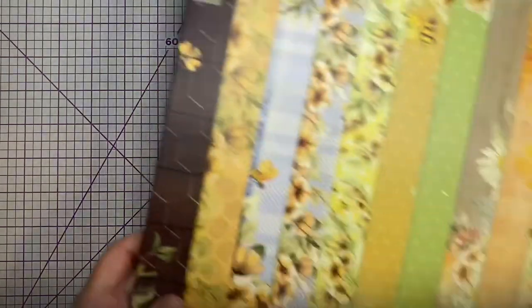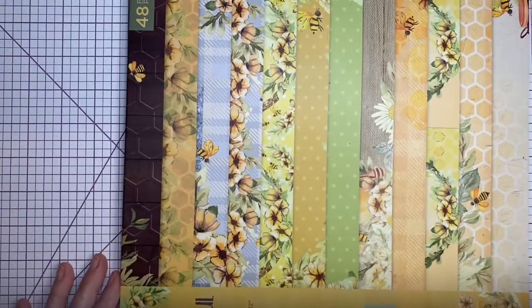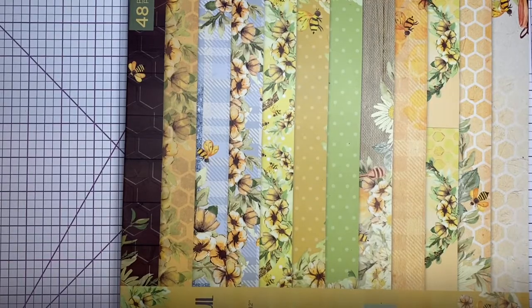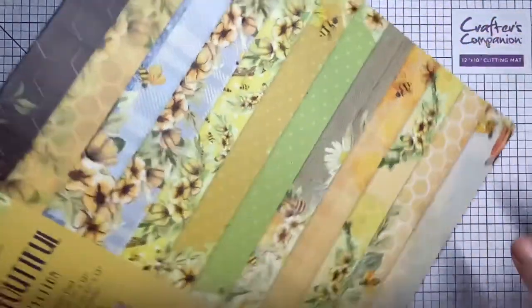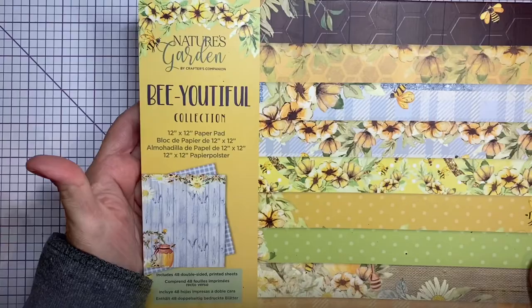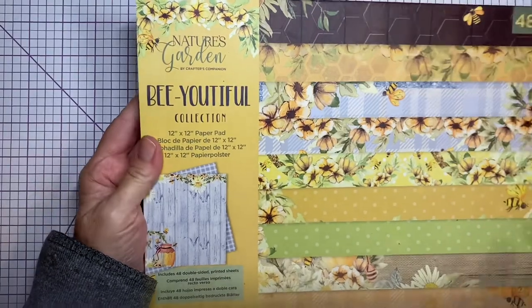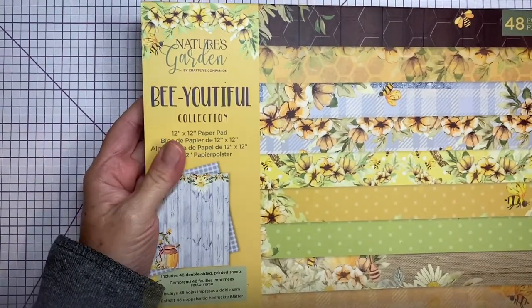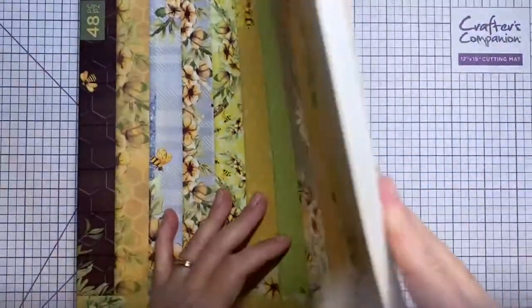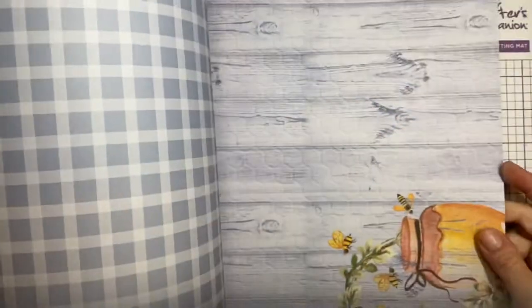So in the first one I have this paper pad. I have a couple of paper pads. This one is called Nature's Garden Beautiful and this is by Crafter's Companion and when I saw it online I absolutely fell in love with it and I'll just do a really quick flip through. This is not a new paper pad by any stretch but it is gorgeous. The paper quality is wonderful.